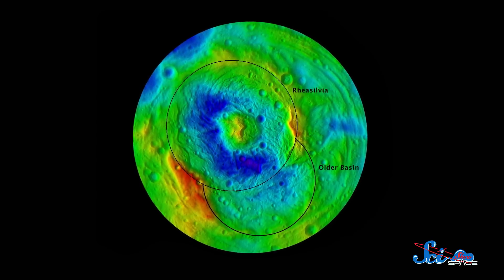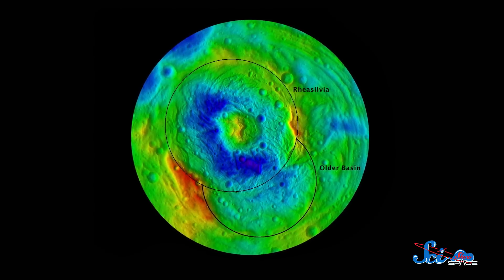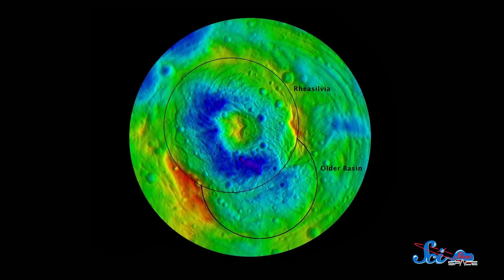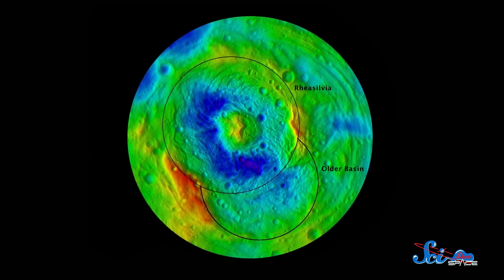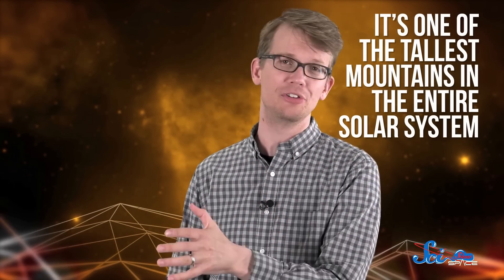The crater is almost as wide as the asteroid itself. If Earth had a crater that big relative to its size, it would fill the entire Pacific Ocean Basin. The crater also has a huge mountain on the edge, which Dawn eventually confirmed is about 22 kilometers higher than the surrounding terrain. That makes it almost three times taller than Mount Everest, and one of the tallest mountains in the entire solar system.